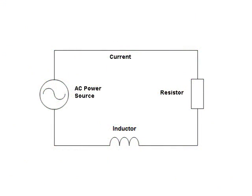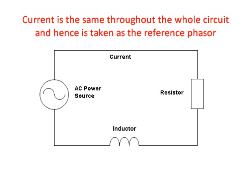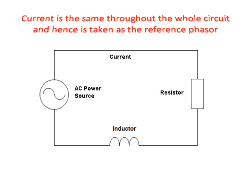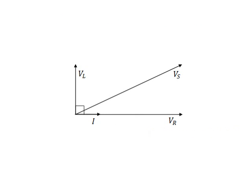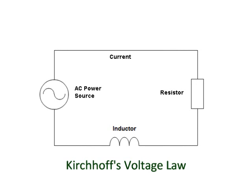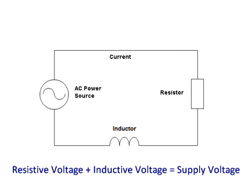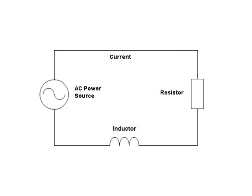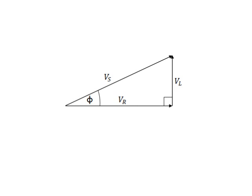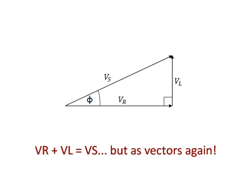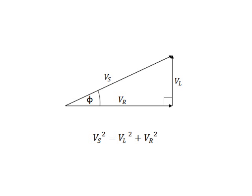In our final example, we shall analyze the series combination involving an inductor and resistor. Once again, the current will be the same through both components, as they are series connected, and will be taken as reference. The resistor voltage VR will be in phase with the current, while the inductor voltage VL will be leading the current by 90 degrees. By Kirchhoff's voltage law, the voltage drops across the two components will again add up to the value of the supply voltage. Their vector addition gives the magnitude of the supply voltage: V supply squared equals VL squared plus VR squared. The phase angle can be found using trigonometry: tangent of phi equals VL over VR.